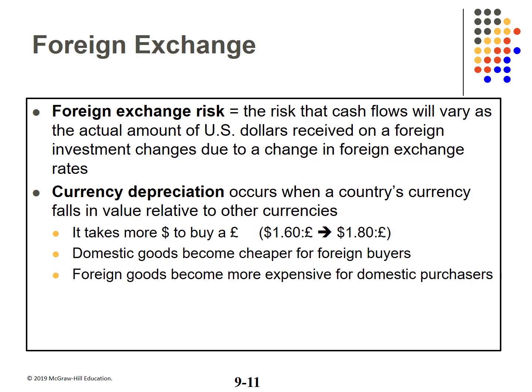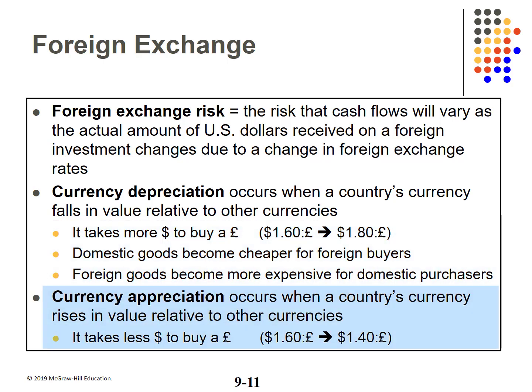A currency depreciates when a country's currency falls in value relative to other currencies. For example, if the rate on the pound sterling moves from $1.60 to $1.80, it takes more US dollars to buy a pound sterling. Domestic goods become cheaper to foreign buyers, while foreign goods are more expensive to US buyers. Currency appreciation is the opposite — a country's currency increases in value versus a foreign currency. If the rate on the pound moves from $1.60 to $1.40, it takes fewer US dollars to buy a pound.